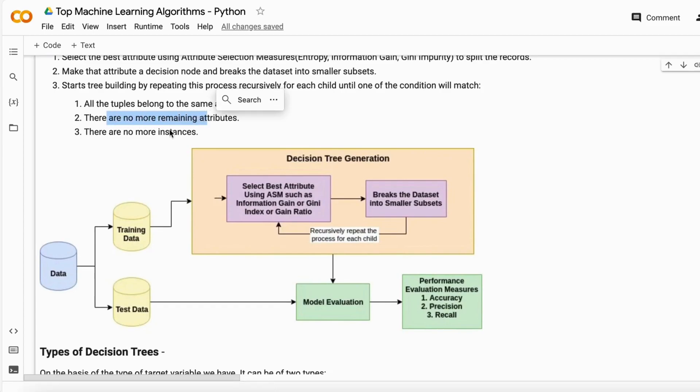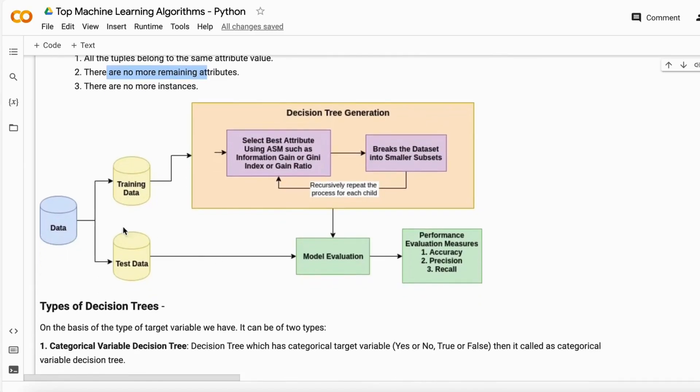You just see that there are no remaining attributes or no remaining instances. It will split until that. So this is how it's gonna work.